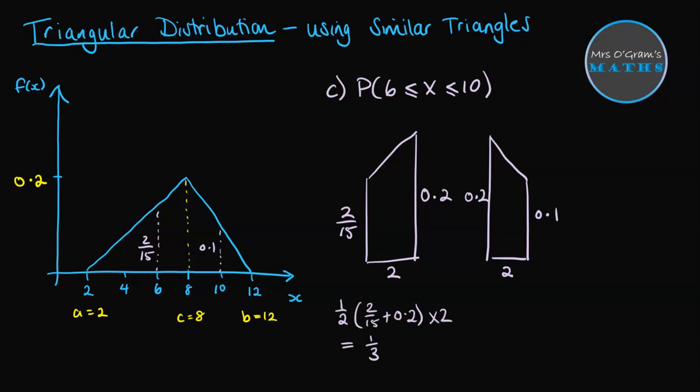That's of course done by add the two parallel sides, divide it by 2, and multiply by the distance between them. So the first one we get an area of a third. The second one we get an area of 0.3. So our total probability is to add those two together. We get a total probability of 0.633.